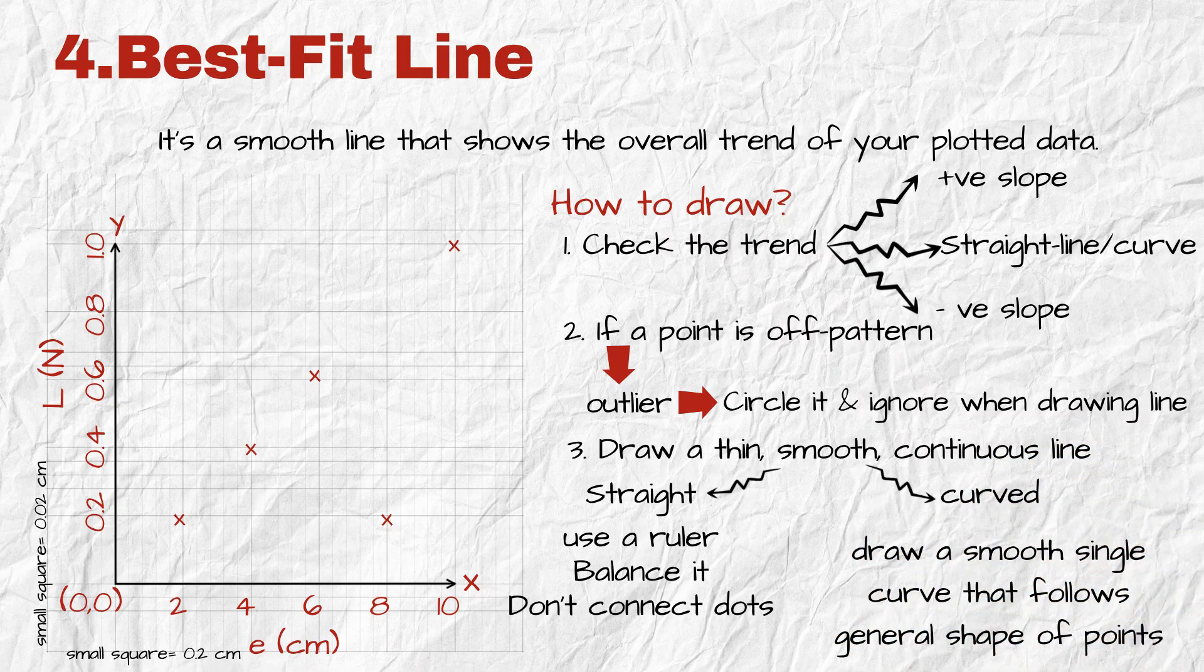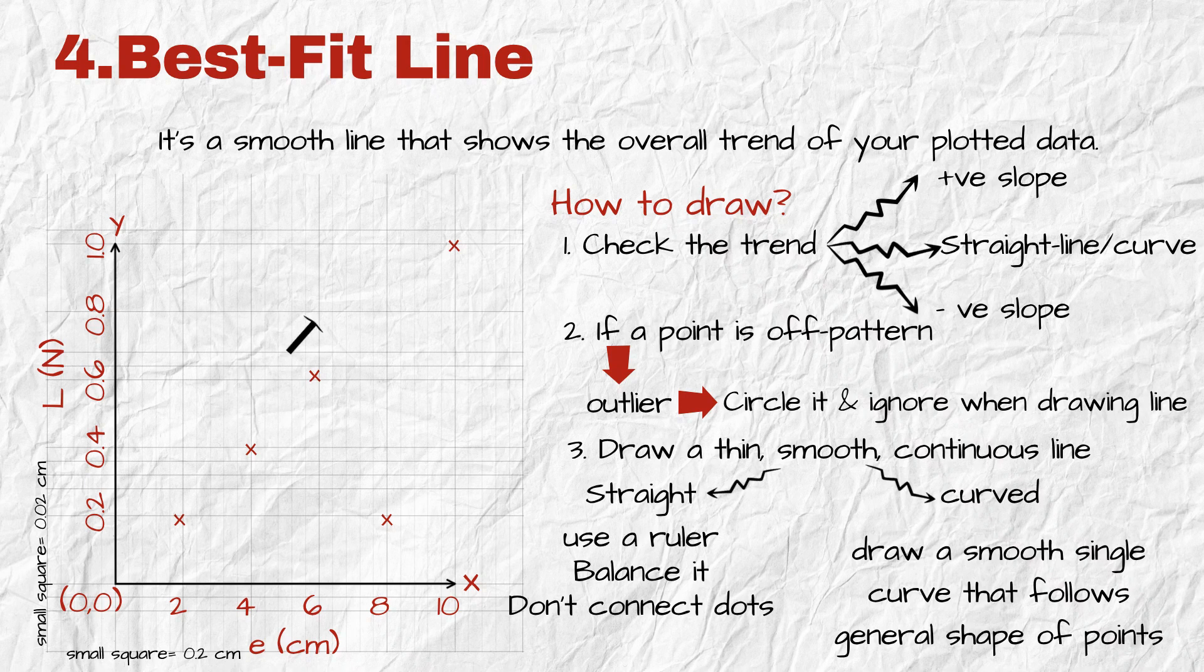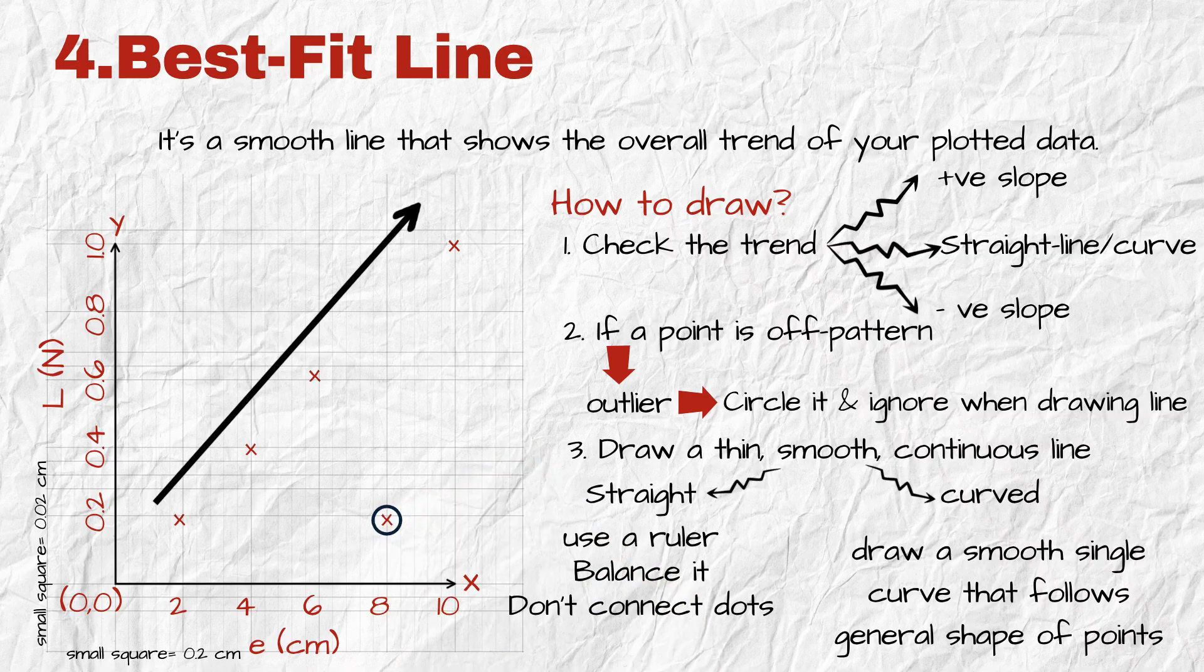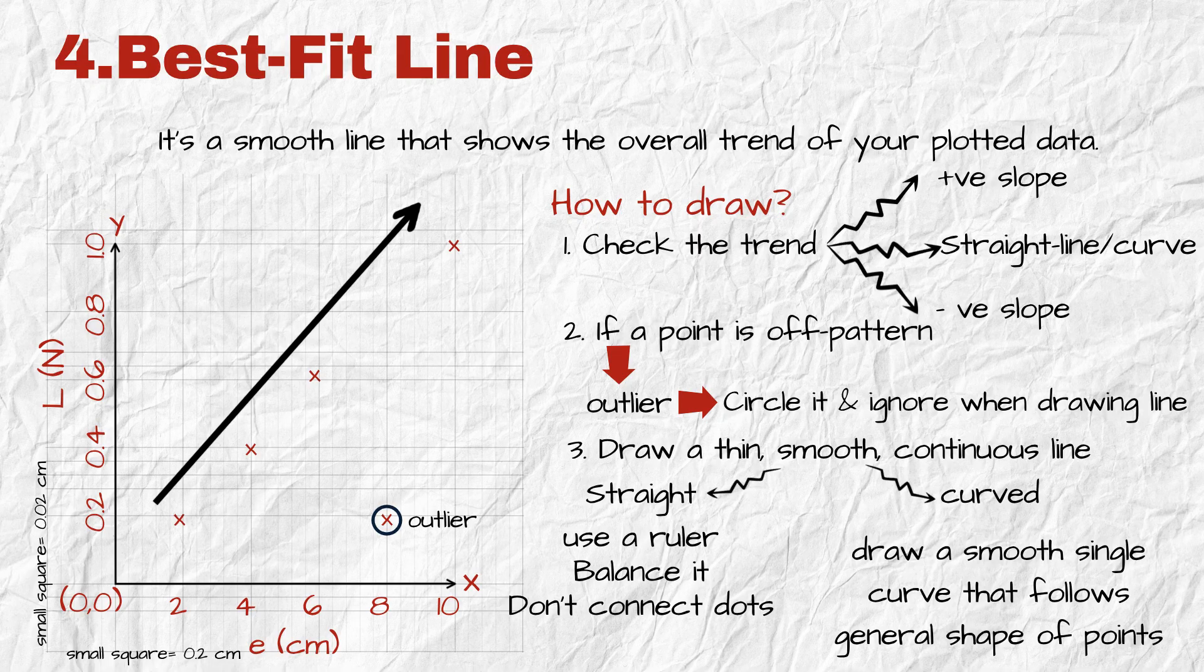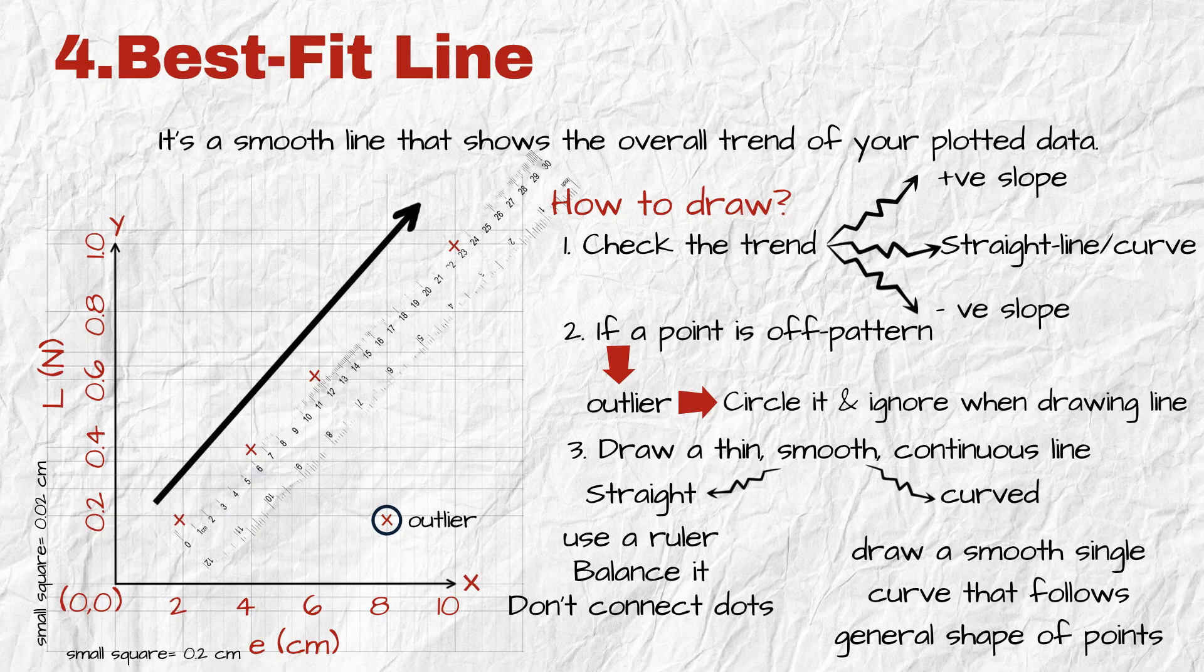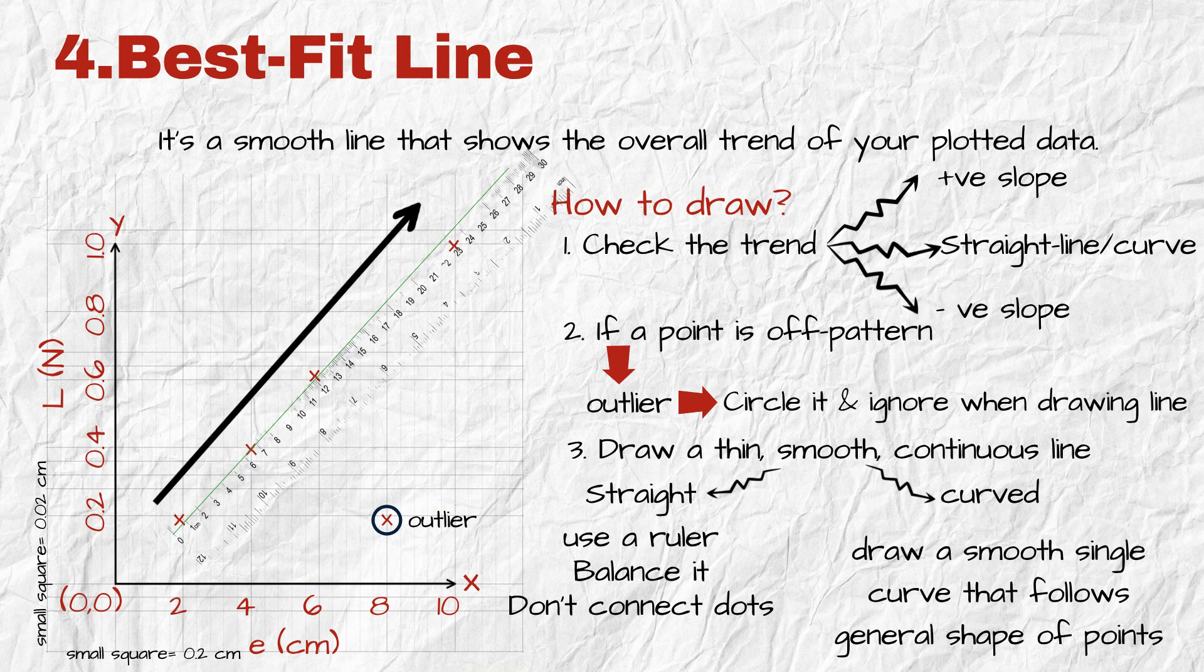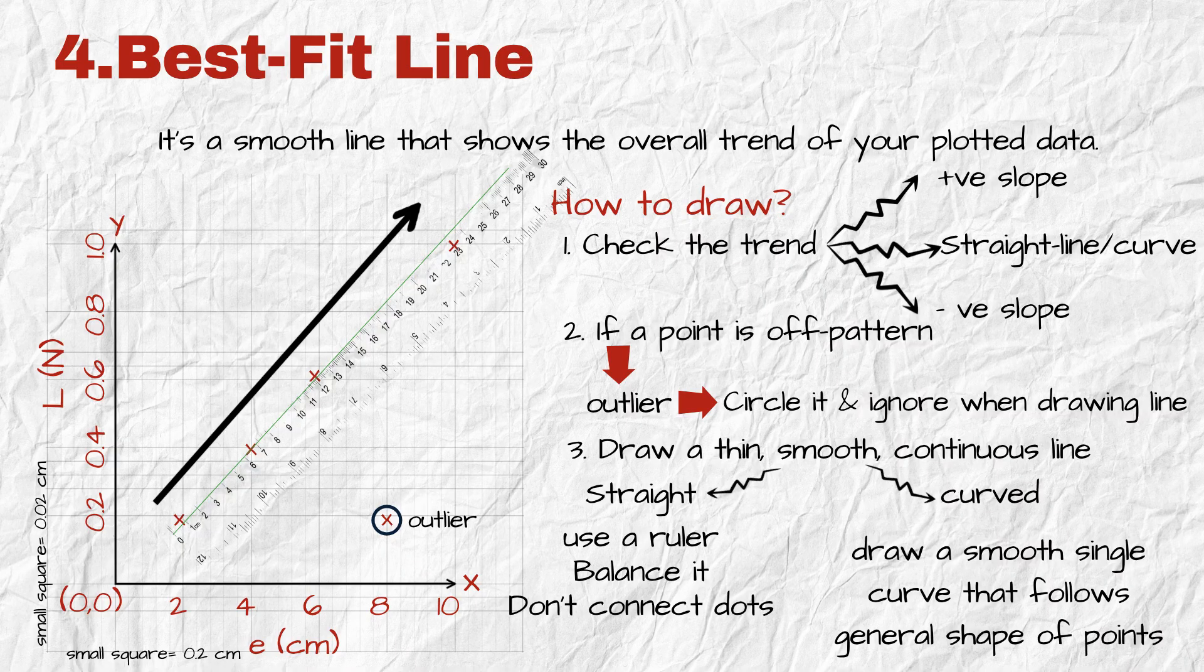Now look at your plotted points. What do you see? There's a clear upward trend, except for one point. That dot at eight centimeters looks way too low. It doesn't follow the pattern. That's an outlier. So what do you do? You circle it once. One clean circle. That tells the examiner, I spotted the outlier. I'm not using it in my line. Now place your ruler across the rest of the points. Adjust it until the line balances. Some points above, some below. Then draw a thin, neat, straight line through the trend. Don't press hard. Don't go over it twice. And don't force it through zero unless the data supports it. That's your trend. That's your judgment. And that's your fourth mark done.